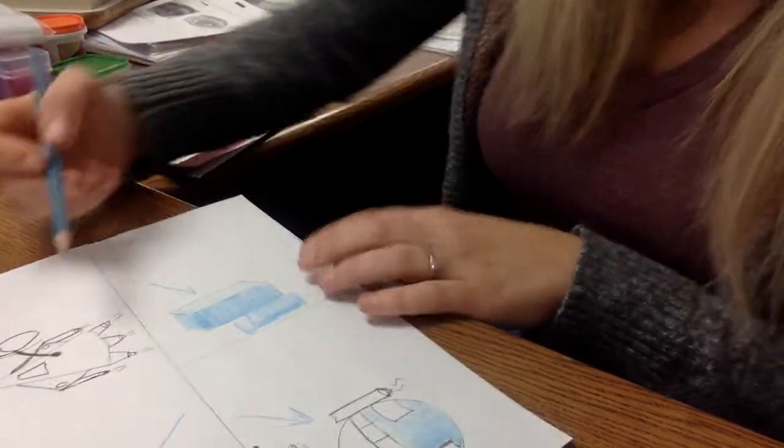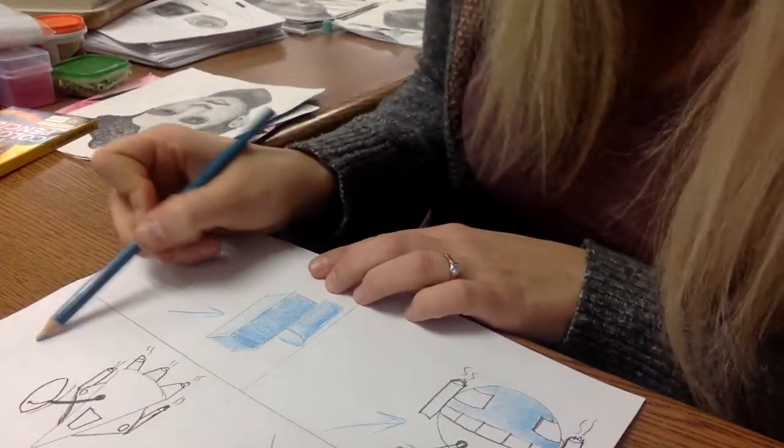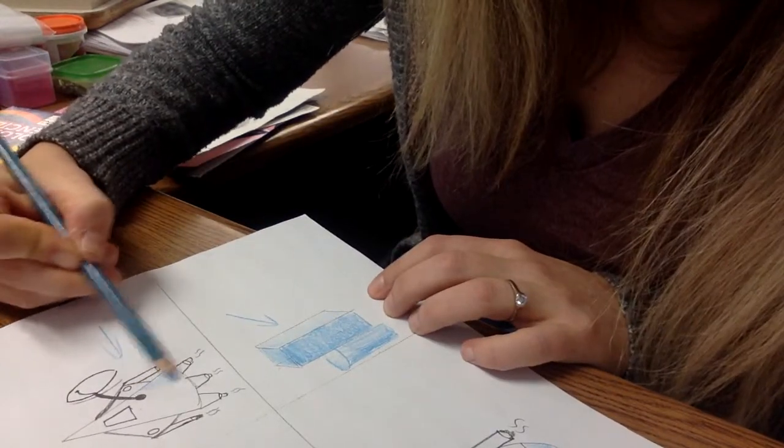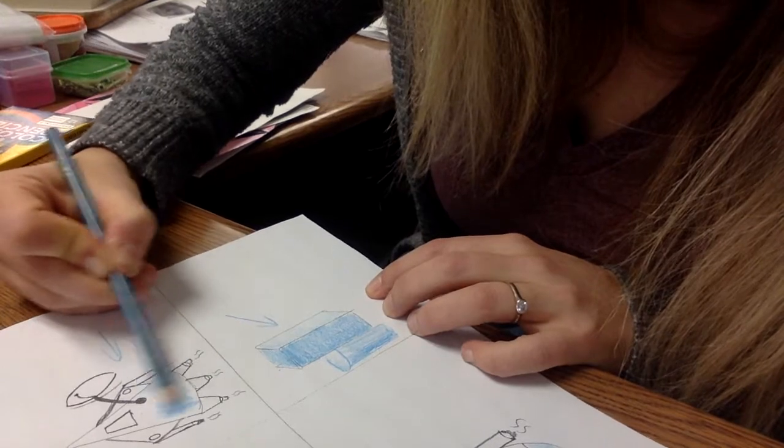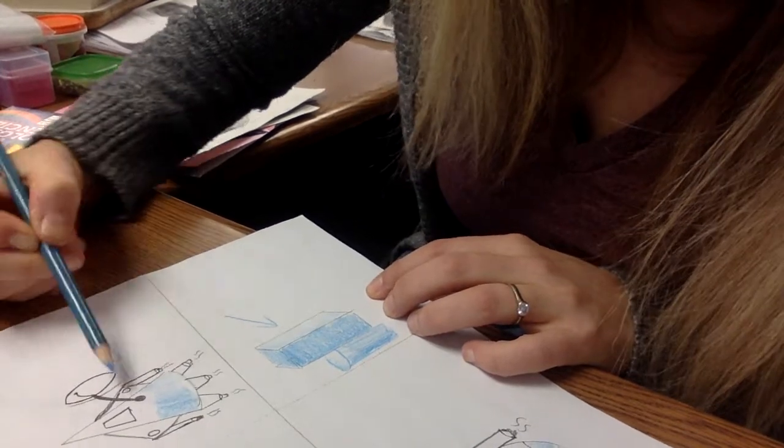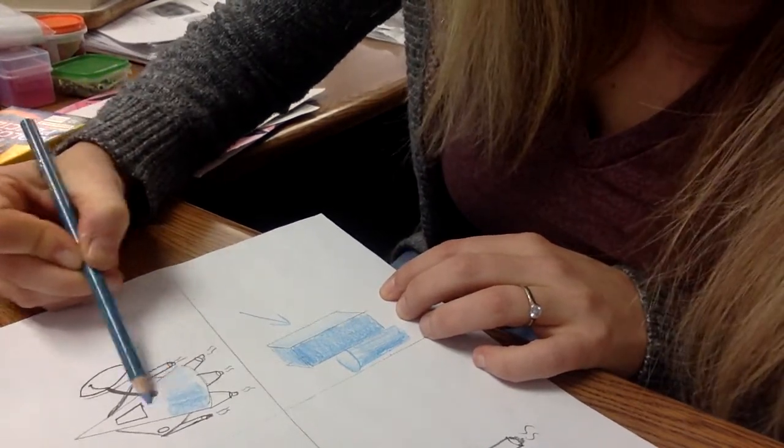So each form you run into, if your light source was coming in this way, light, again, take your time. This is obviously a demo. Light to dark, away from the light source. How would the light hit that?